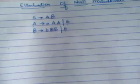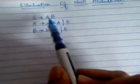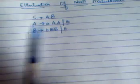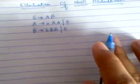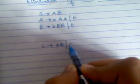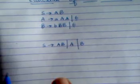Since A and B are nullable, we can write all the combinations of the productions. For S gives AB, we write all combinations of A and B by applying null productions on each of them. We will not write null in the production because we are eliminating null. So S gives AB, and then A — nullifying B, and then B — nullifying A. We cannot write S gives null because we are eliminating null, so we will not use that.